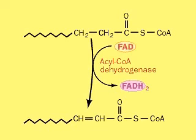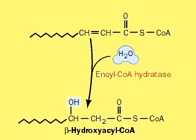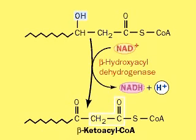Enoyl-CoA hydratase hydrates the molecule by adding water across the double bond, forming beta-hydroxyacyl-CoA. A second oxidation uses beta-hydroxyacyl-CoA dehydrogenase and the oxidizing agent NAD+ to make beta-ketoacyl-CoA.